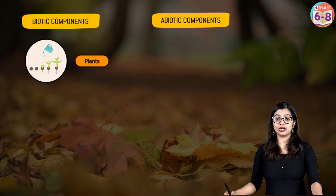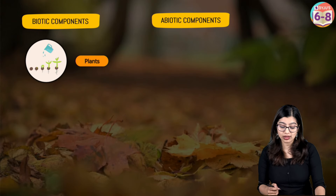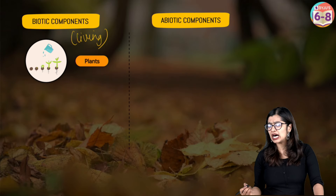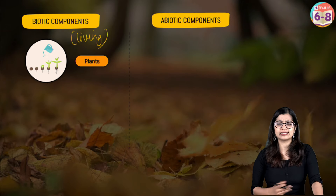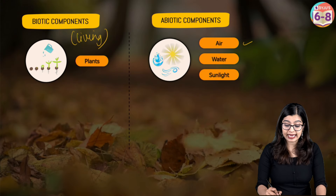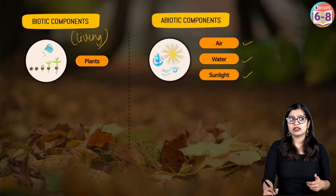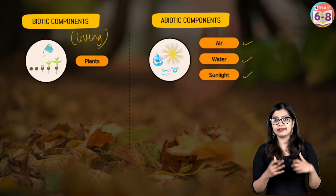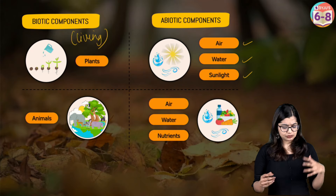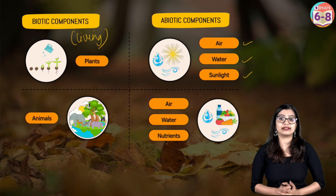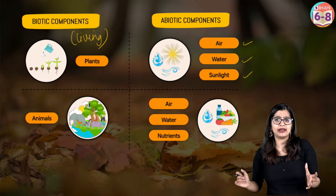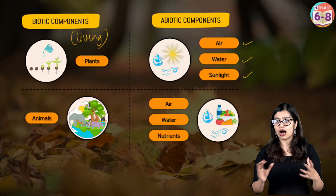Biotic components include all things which are living — like plants, animals, and microorganisms. On the other hand, things like air, water, and sunlight are non-living. Similarly, things like a table, chair, and pen are all said to be non-living.